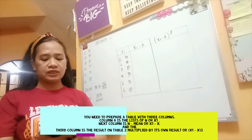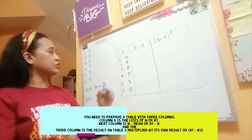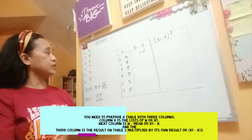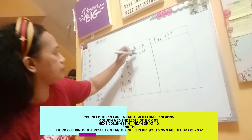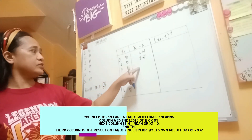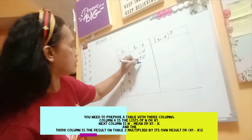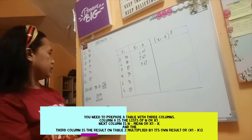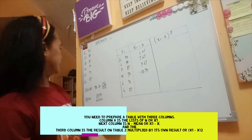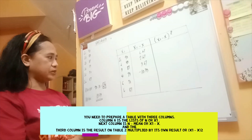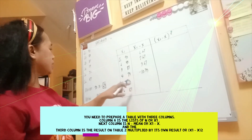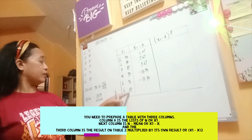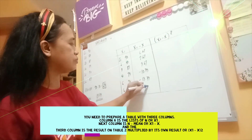So, 90 minus 83.33 gives us 6.67. Then 93 minus 83.33 gives us 9.67. Then 87 minus 83.33 gives us 3.67. Then 73 minus 83.33 gives us negative 10.33. Then 70 minus 83.33 gives us negative 13.33. And 87 minus 83.33 gives us positive 3.67.